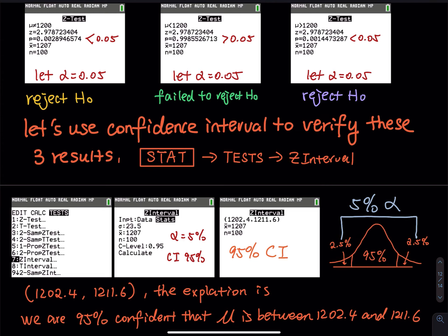If alpha is 10%, then the confidence interval should be 90%. So: 5% alpha → 95% confidence interval; 10% alpha → 90% confidence interval; 1% alpha → 99% confidence interval; 20% alpha → 80% confidence interval. They must always add up to 100% — that is the total area under the curve.